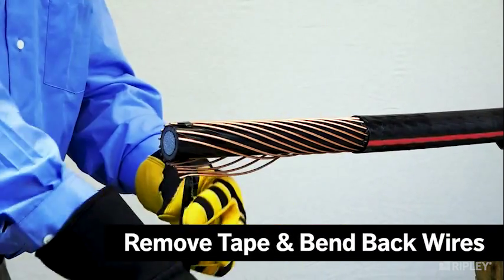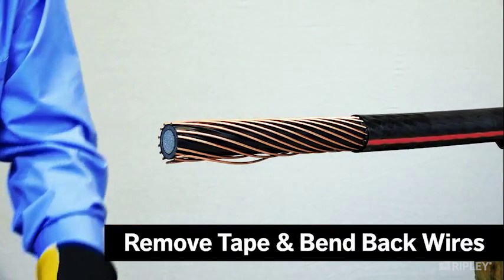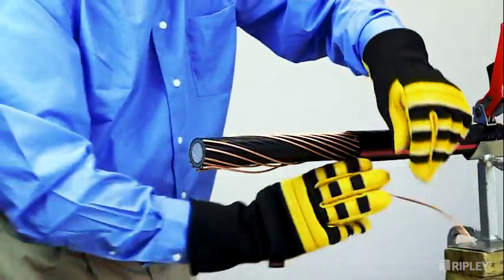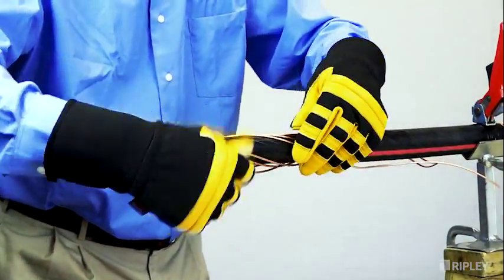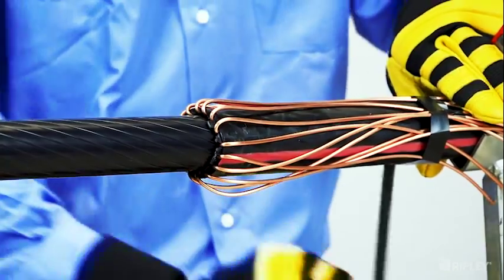Unwrap the electrical tape from the concentric wires and bend them back over the remaining jacket exposing the semi-con. Then secure in place.